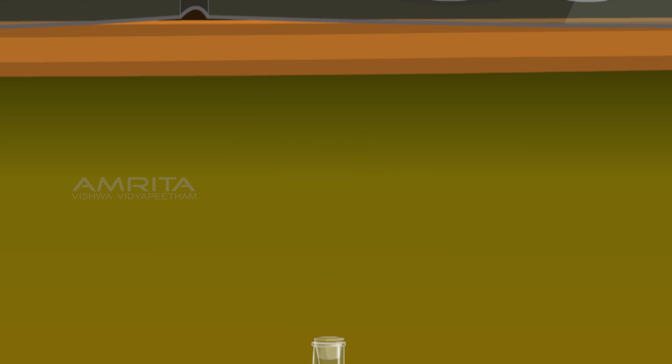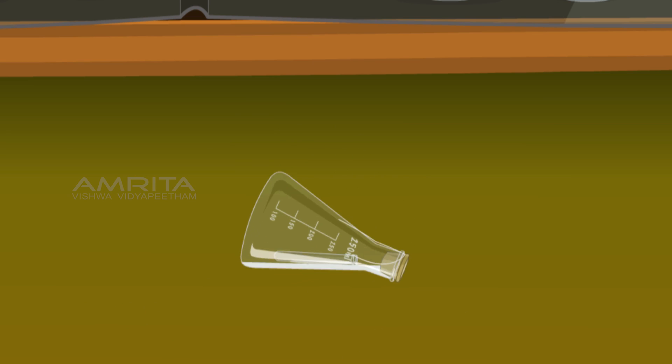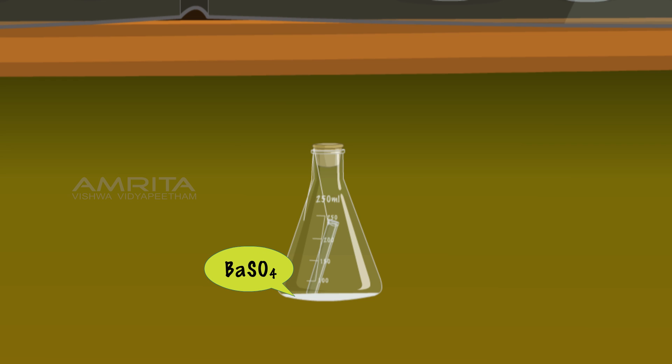Take the flask from the balance, tilt it and swirl the flask so that barium chloride solution in the test tube spills and mixes with sodium sulphate solution in the flask and forms a white coloured precipitate of barium sulphate and an aqueous solution of sodium chloride.